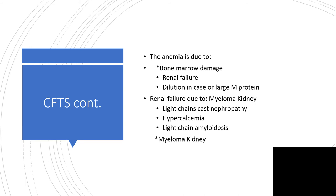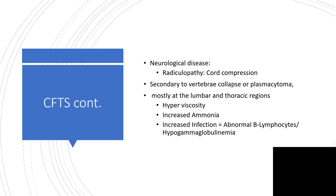Renal failure caused by multiple myeloma proteins and bone marrow damage is called myeloma kidney. It will be due to light chain cast nephropathy, the presence of hypercalcemia leading to nephrolithiasis — that is kidney stones — and light chain amyloidosis. Neurological disease can be found in the form of radiculopathy secondary to cord compression, which may be secondary to vertebral collapse or plasmacytoma, mostly at the lumbar region and also at thoracic regions. There will be hyperviscosity, increased infection, particularly in the presence of abnormal B-lymphocytes or hypogammaglobulinemia.